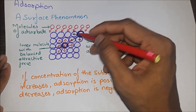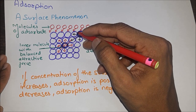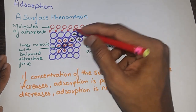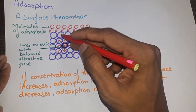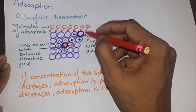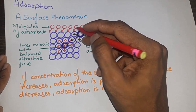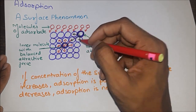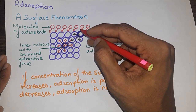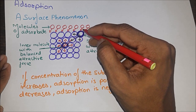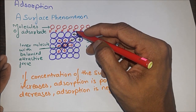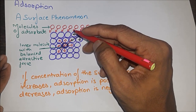Why is it known as a surface phenomenon? In the case of liquids and solids, the inside molecules are attracted equally from all sides, while those present on the surface are attracted only by inward forces. As a result of those unbalanced forces on the surface, the solid and liquid surface tend to attract and retain other molecules on the surface by forming a bond between them and the surface molecules.